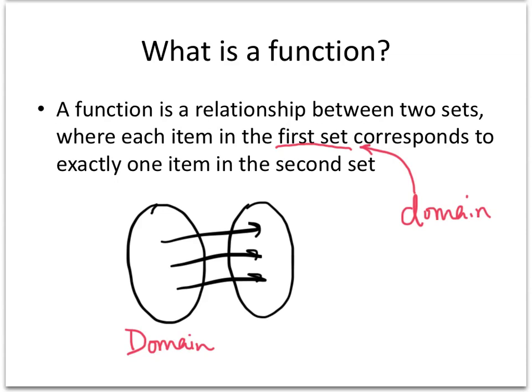The second set is called the co-domain. Some people think that that's called the range, but the range is actually something else that we'll get to a little bit later. The second set is the co-domain.